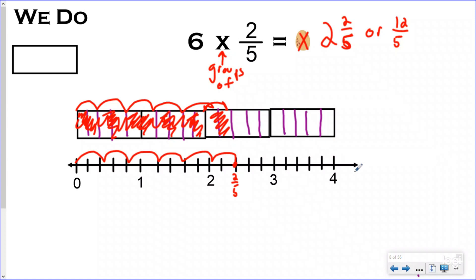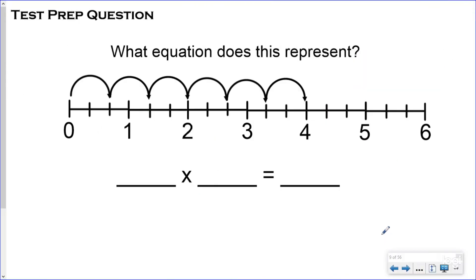Let's take a look here at this test prep question. So this might be a question that you might see from those tricky old people who make your tests and it's giving you the number line and it's saying what equation does this represent? So obviously this is repeated addition, which means we want to read this times sign as saying the words groups of.